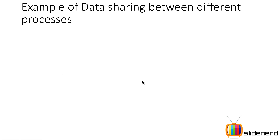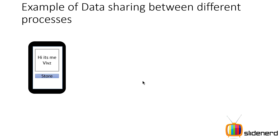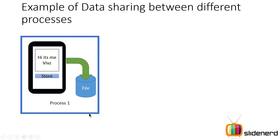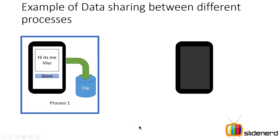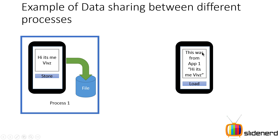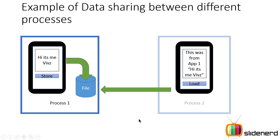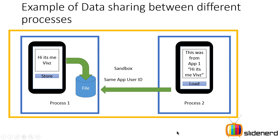Let's look at a simple example we'll work through in the next video. App One has an EditText saying 'Hi, it's me Waves' — you click Store and that data is put inside a file belonging to App One, running inside Process One. App Two then loads that same data from App One's file by clicking Load, running inside a separate Process Two. This is made possible by having a common app user ID. The word 'sandbox' collectively means the app user ID, the process, and the file system combined together.